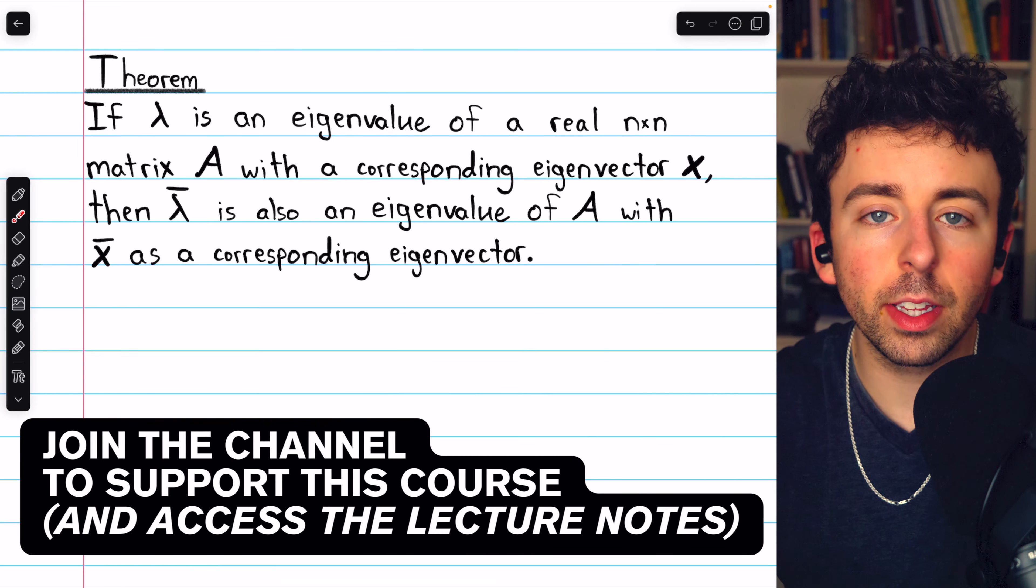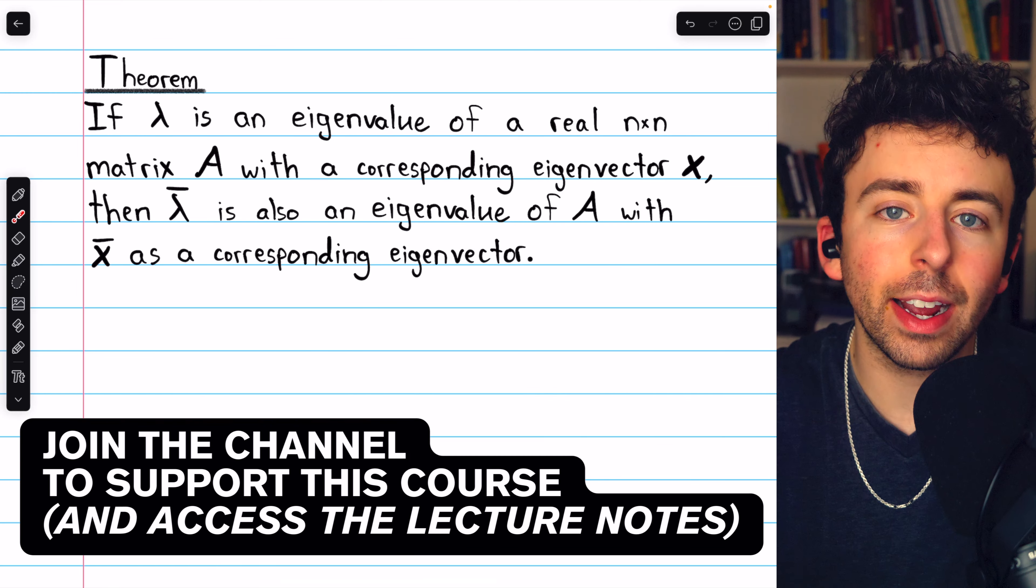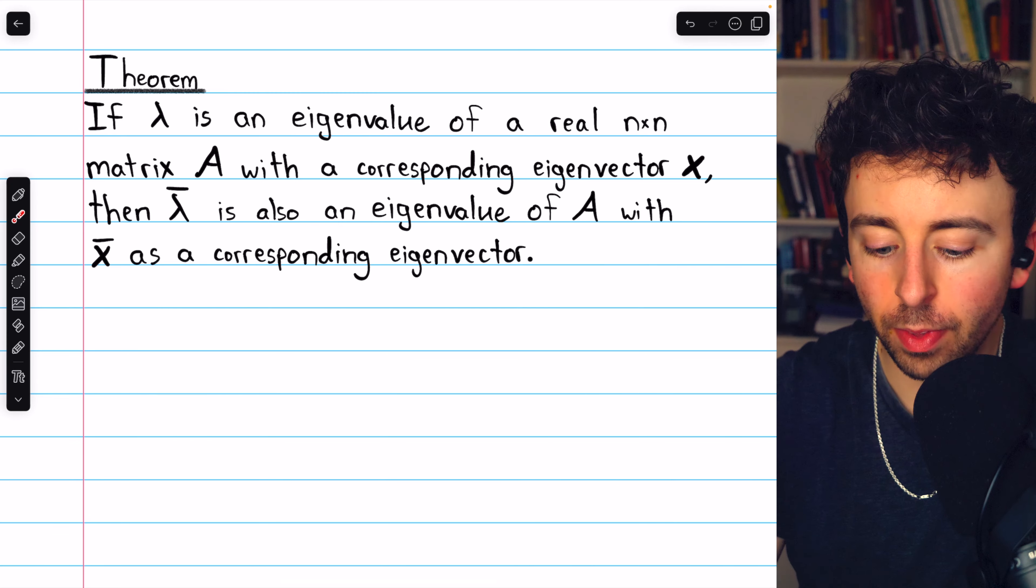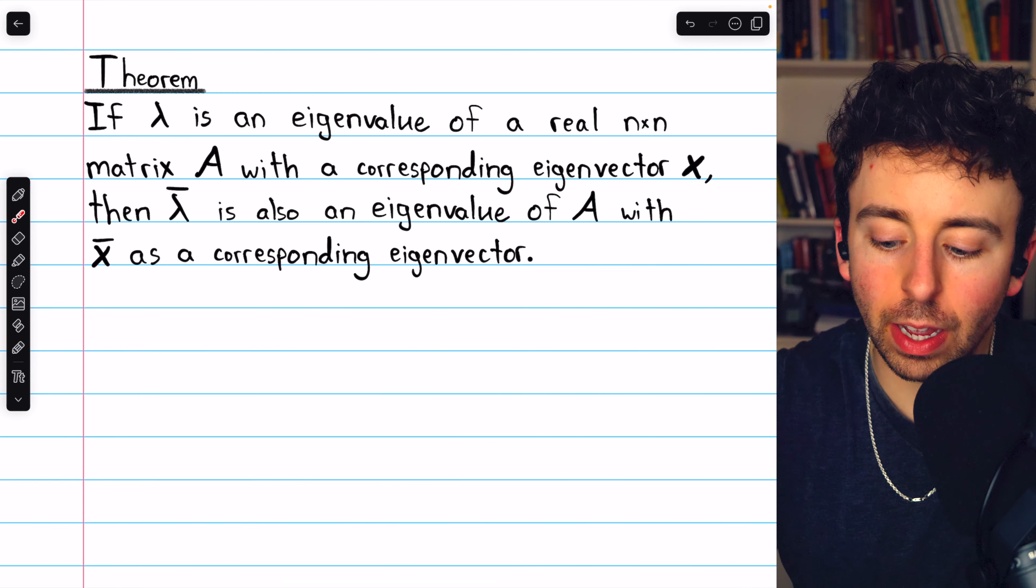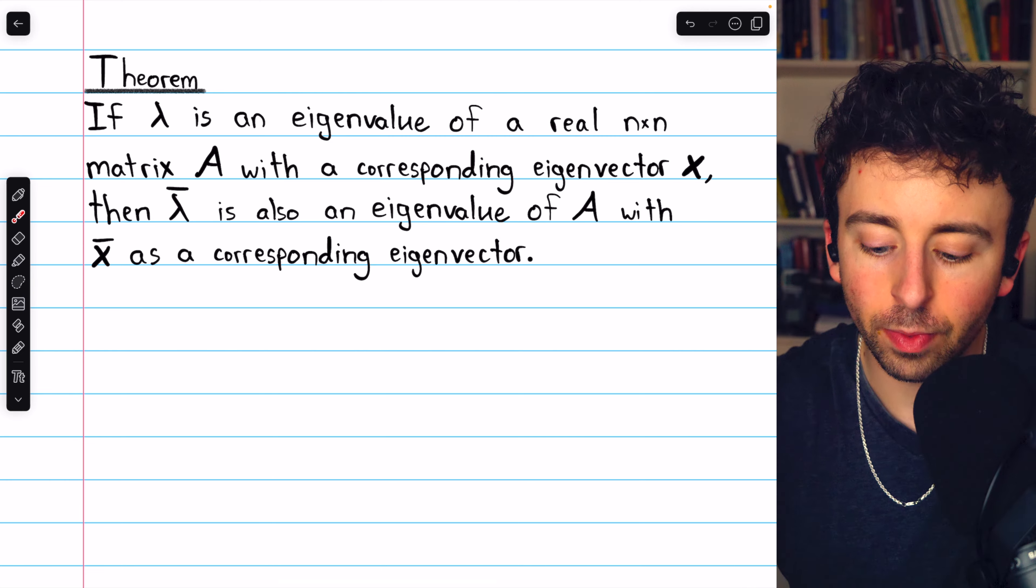Here's a handy theorem concerning the eigenvalues and eigenvectors of a real matrix. If lambda is an eigenvalue of a real n-by-n matrix A with a corresponding eigenvector X,